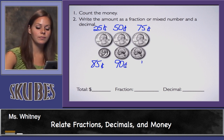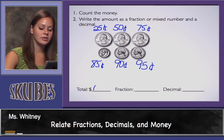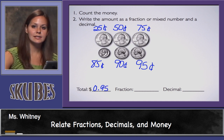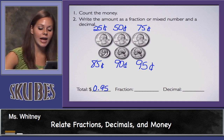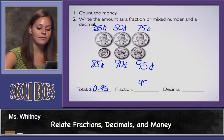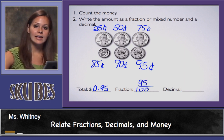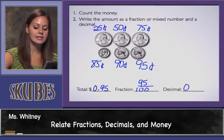Plus another nickel, I have 95 cents. My total is zero dollars and 95 cents. If I'm going to write this as a fraction I write it as 95 hundredths, and as a decimal I write it 0.95.